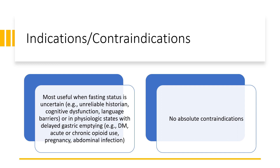Gastric ultrasound is indicated in any clinical scenario where the presence of gastric contents is uncertain. It's a simple and non-invasive diagnostic tool to evaluate aspiration risk. It's most useful when fasting status is uncertain — for a patient who is an unreliable historian, has cognitive dysfunction, if there's a language barrier, or in physiologic states with delayed gastric emptying like diabetes, acute or chronic opioid use, pregnancy, abdominal infection, or neuromuscular disease.